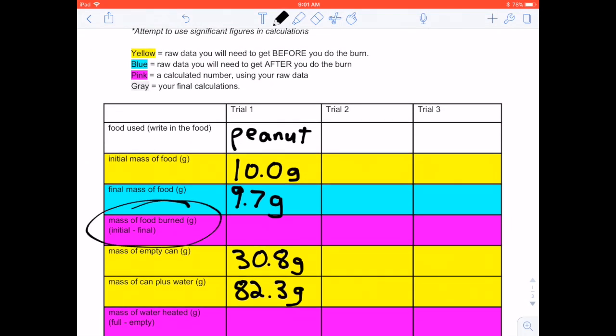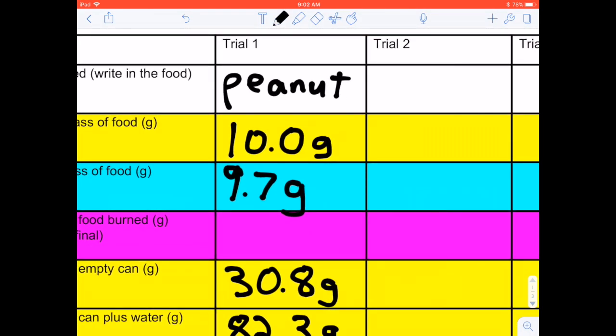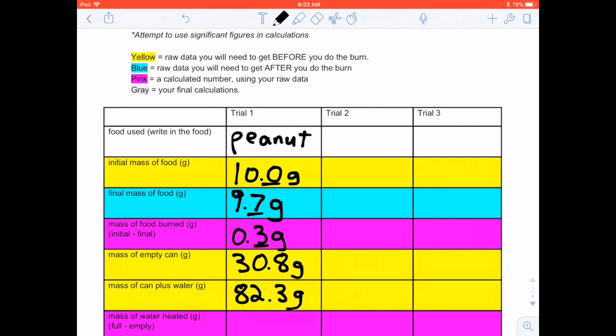So to determine the mass of the food burned, just take the initial mass, subtract the final mass. So 10.0 minus 9.7 equals 0.3 grams. Since there's only one number past the decimal place, for significant figures there's only one number past the decimal place here in a subtraction.